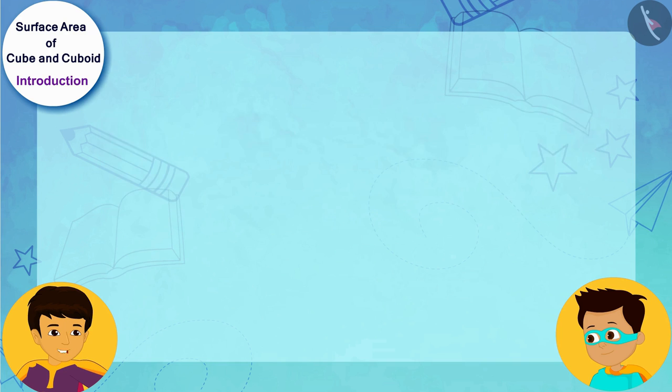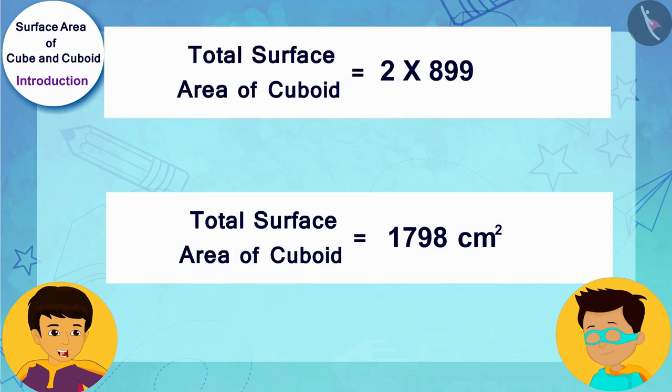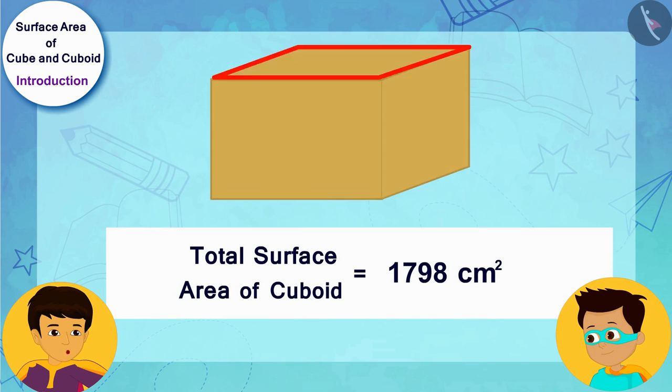Yes, I got it. For my cuboid box, we need 1798 square centimeters of cardboard.